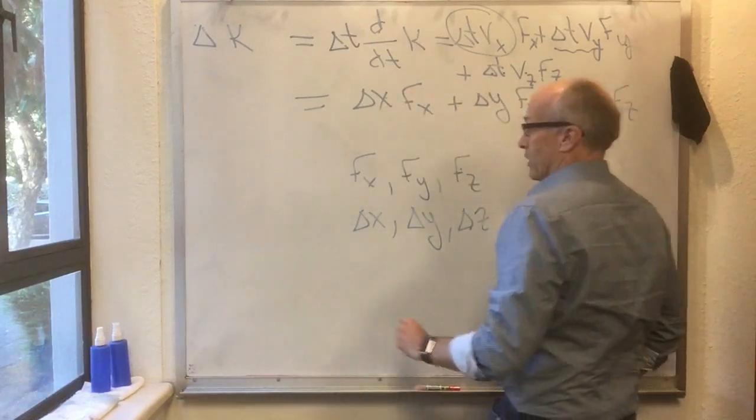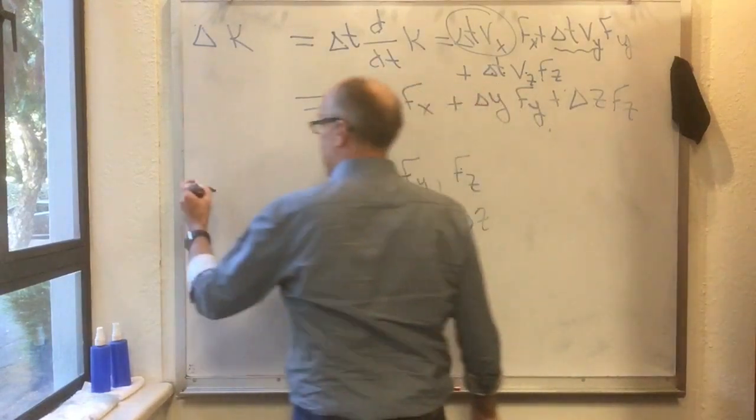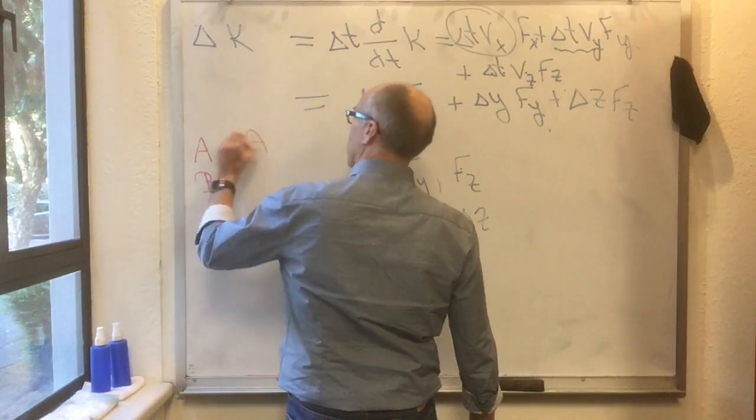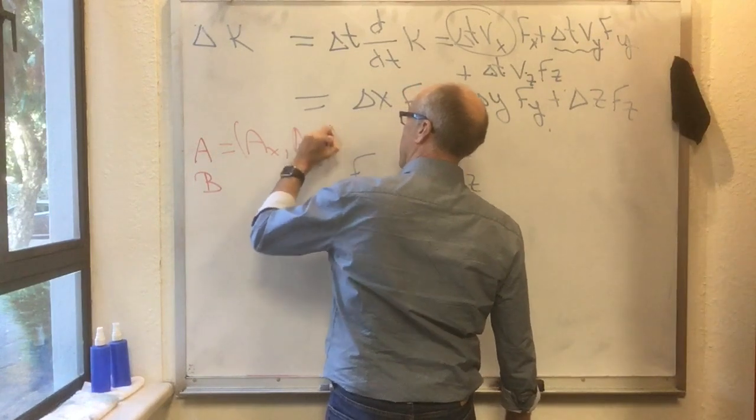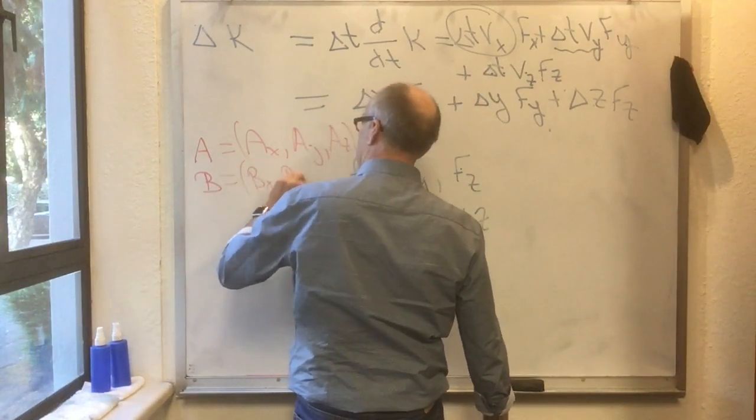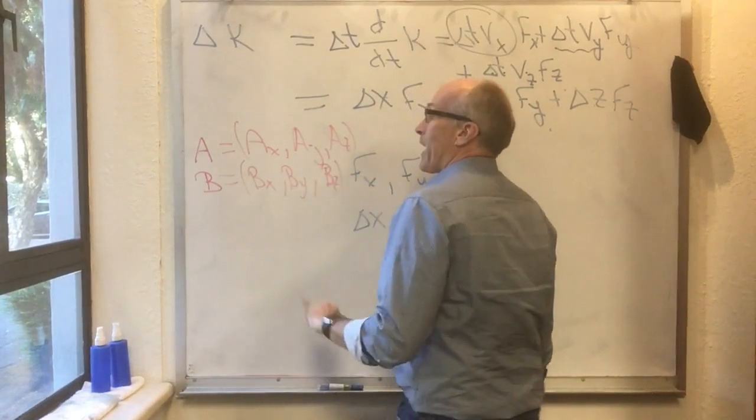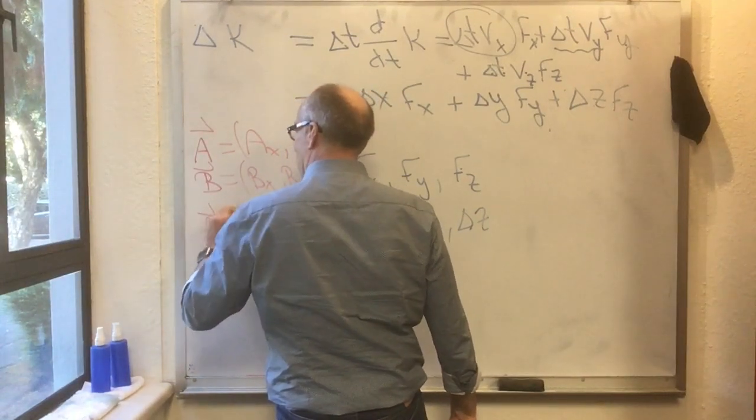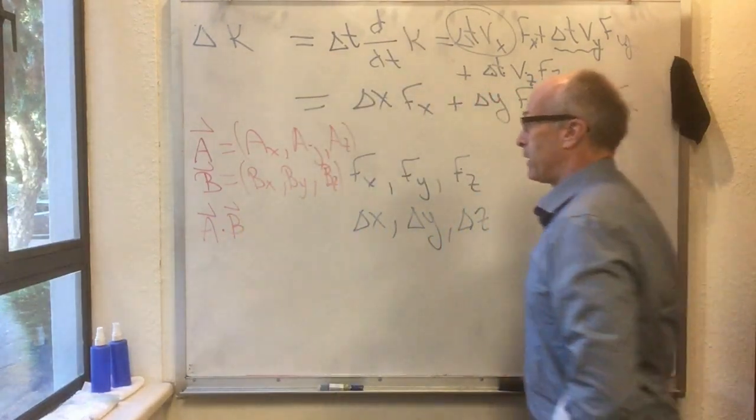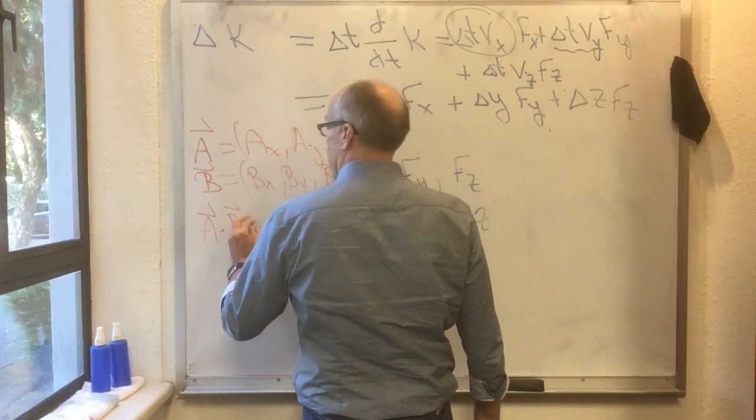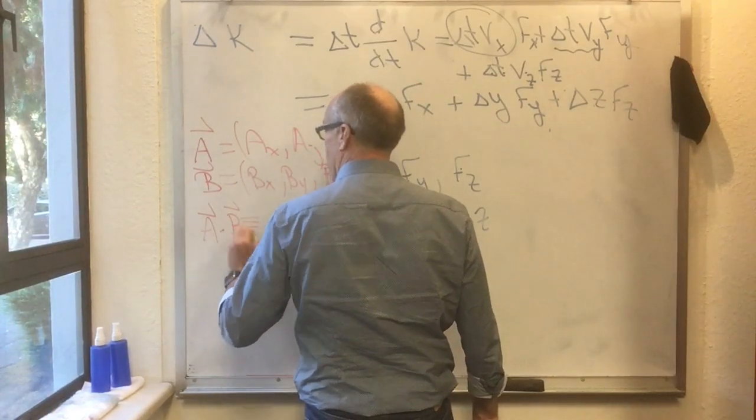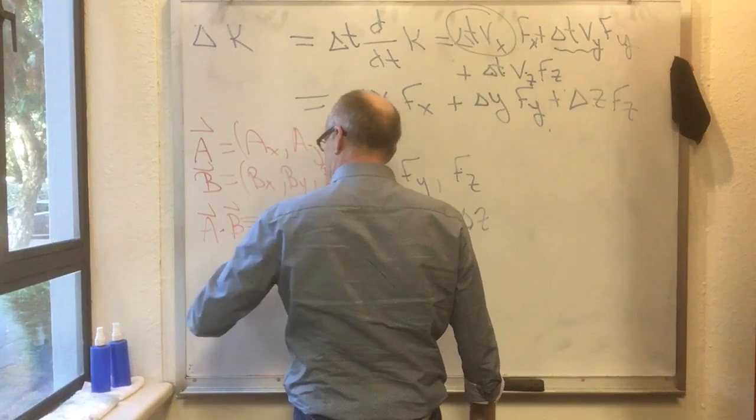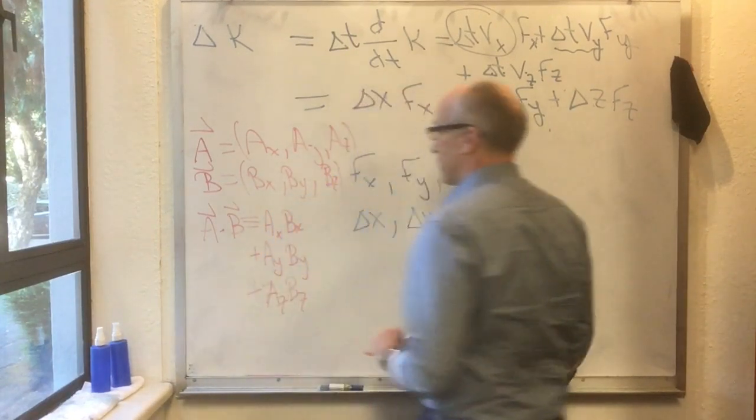Just let me introduce some more notation. If I have any two vectors a and b, where a equals ax, ay, az and b equals bx, by, bz, then I can define a new thing which I call a dot b, also known as a inner product b. This is the definition: a inner product b equals ax bx plus ay by plus az bz. That's the definition of a dot product.